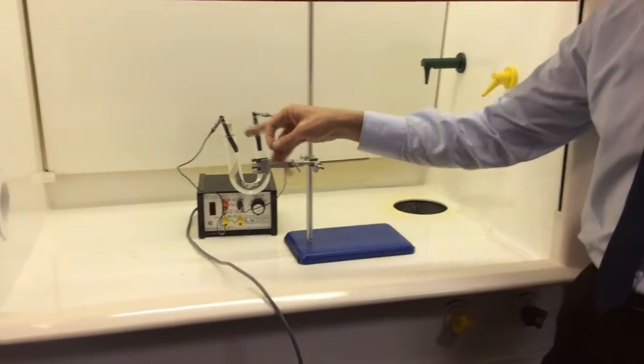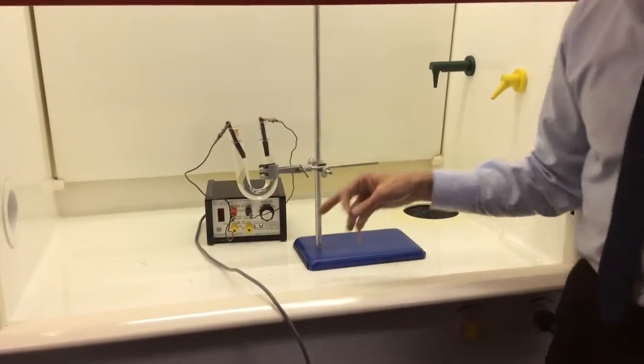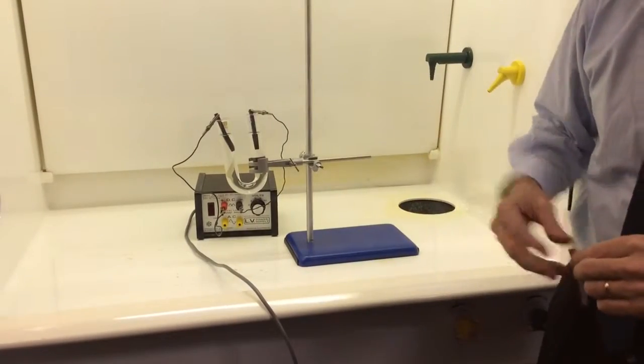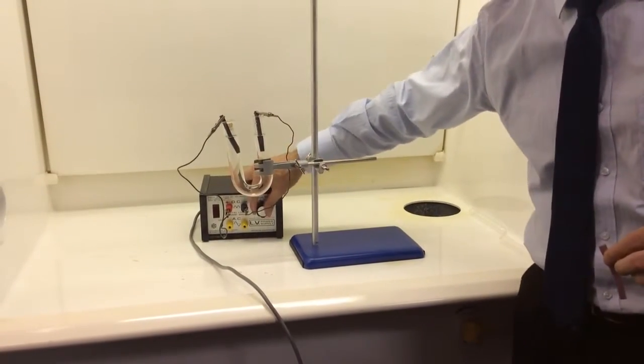Sodium chloride solution, we've got two inert carbon electrodes in it. We're just going to electrolyze it, so I'm just going to pass an electric current through it.